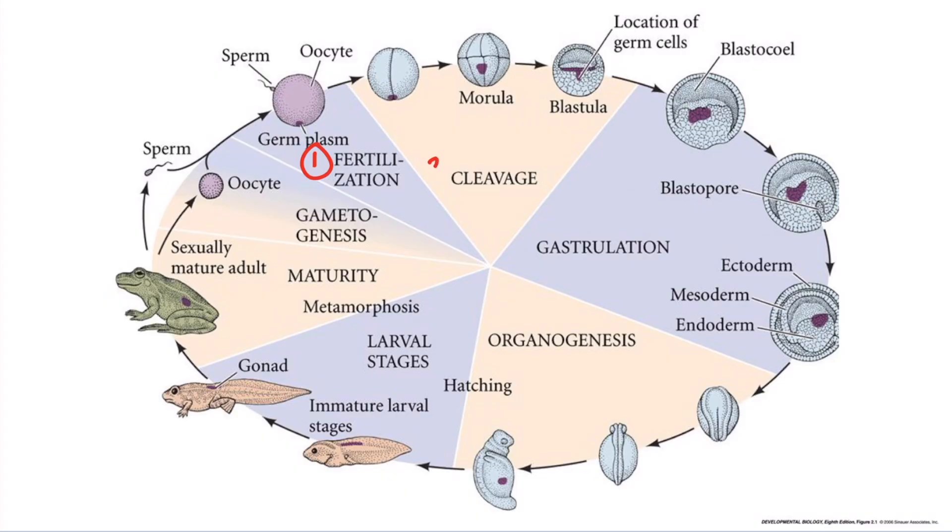Next is the cleavage stage, a series of rapid mitotic cell divisions that divide the embryo without increasing mass. During cleavage, the cell cycle consists primarily of the S and M phases, otherwise known as the DNA synthesis and mitosis phase.